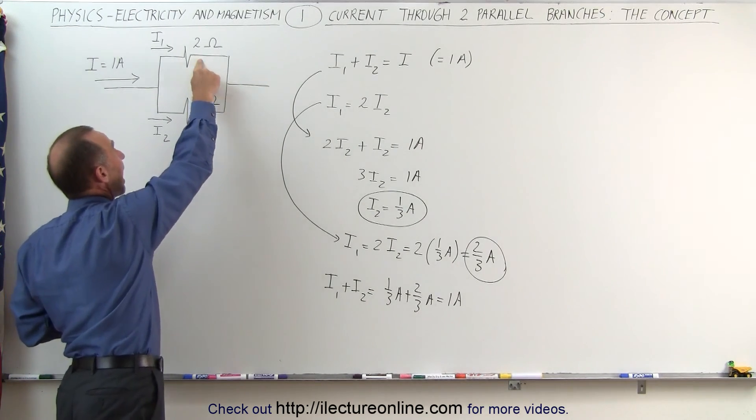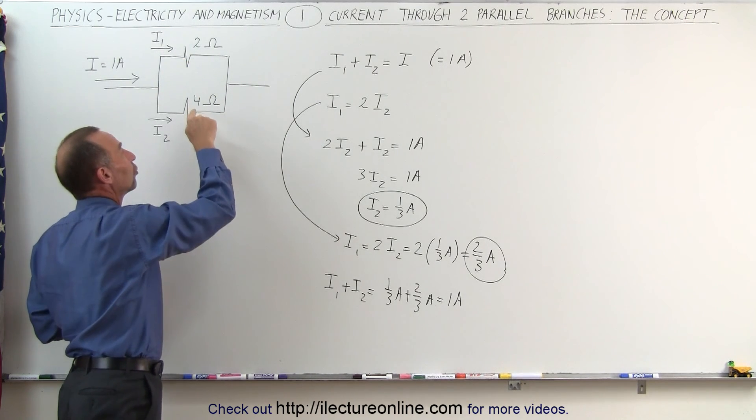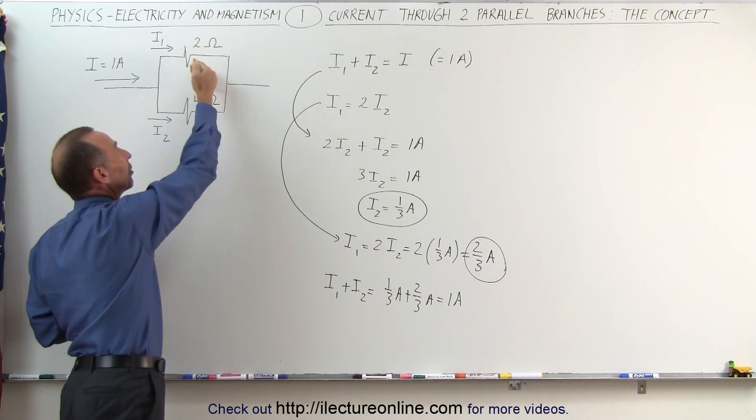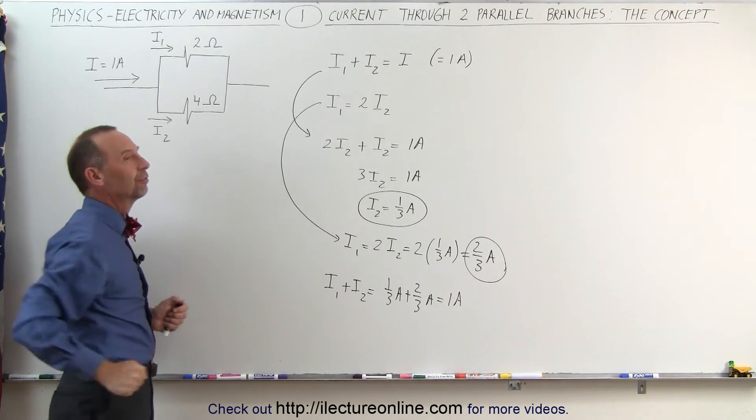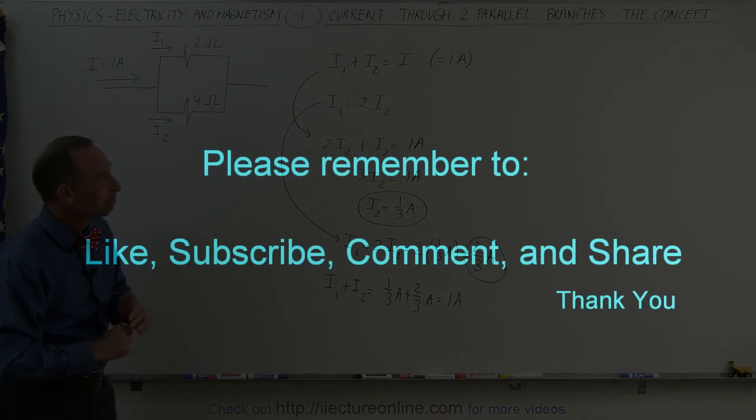Again, since this has half the resistance of this branch, it will have double the current. This has twice the resistance of this branch, it will have half the current relative to the other. And that's how we figure that out.